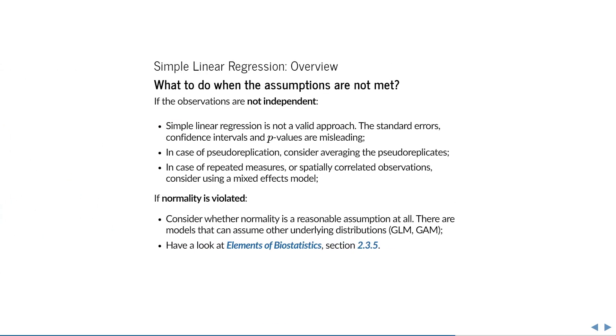What to do then in case of violated assumptions is basically the same as with ANOVA. If your measurements are not independent then you shouldn't be using a simple linear model in the first place. A mixed model can be used instead. In case normality is not a reasonable assumption, then there are regression models that allow for different probability distributions, like the generalized linear model or generalized additive models. Mild deviations from normality are usually not a problem. You can use the simulation I've included in Elements of Biostatistics section 2.3.5 to get an indication of how large a deviation is still considered mild.